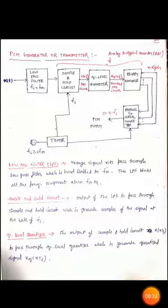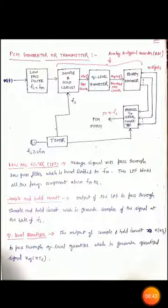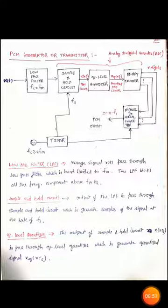The sampling frequency F_s, which is greater than or equal to 2F_m, is generated by an oscillator. The output of this oscillator passes through the sample-and-hold circuit and the parallel-to-serial converter via a timer. This completes the PCM transmitter or PCM generator.